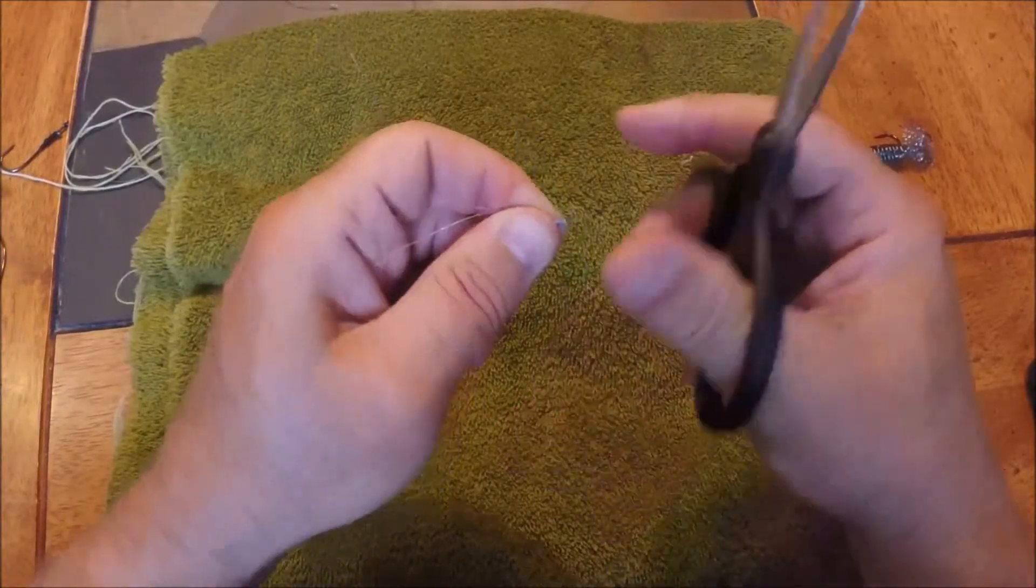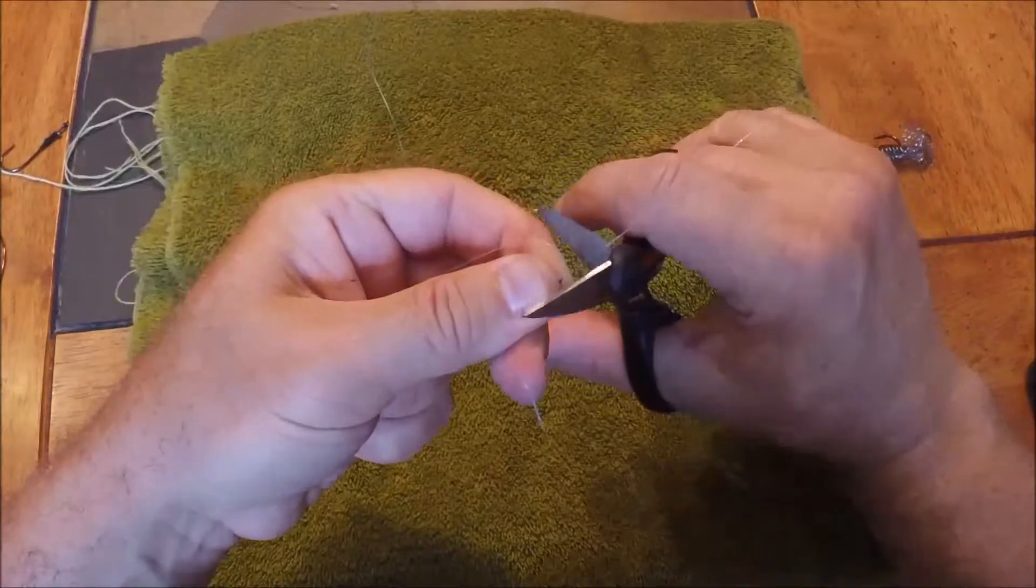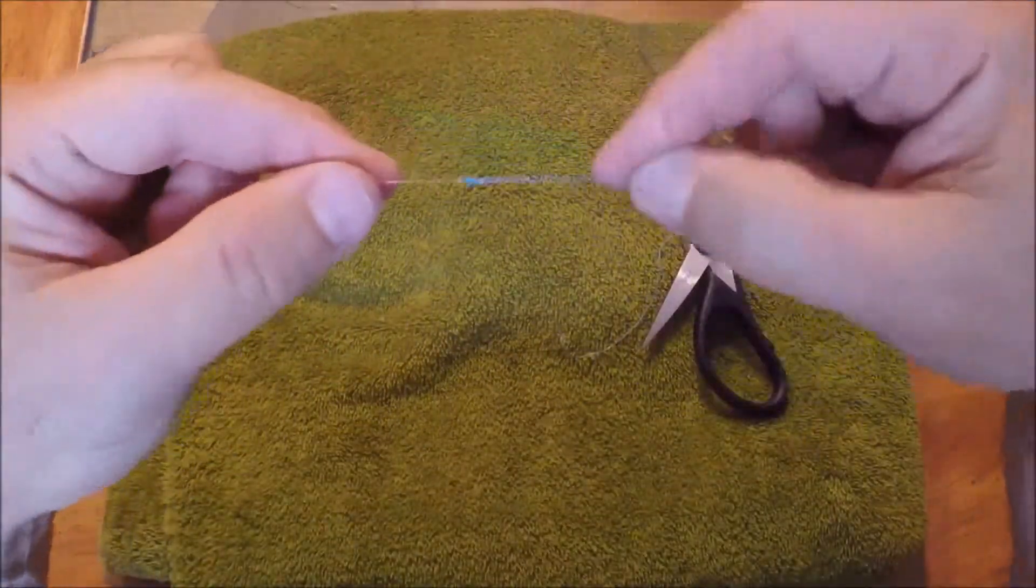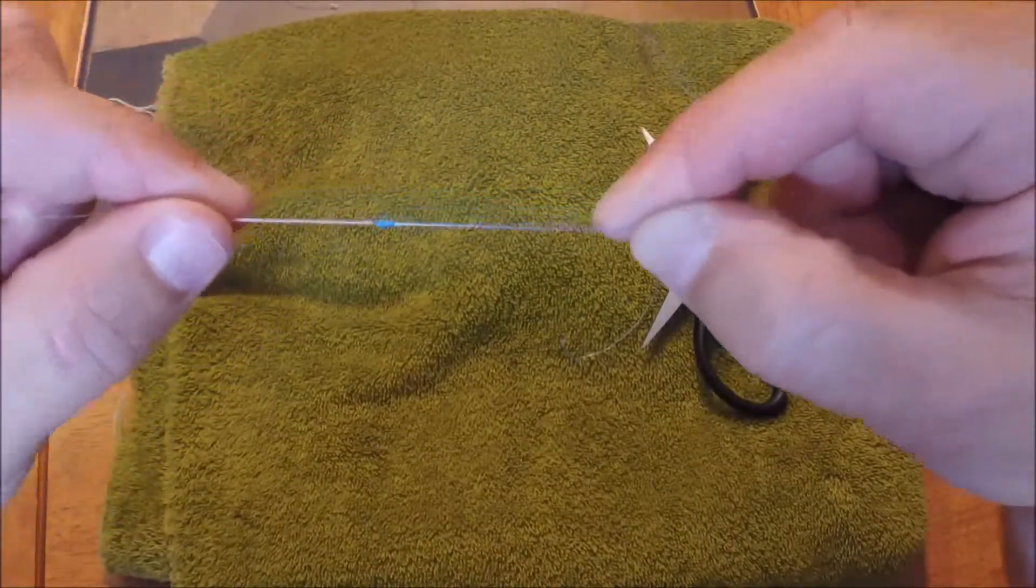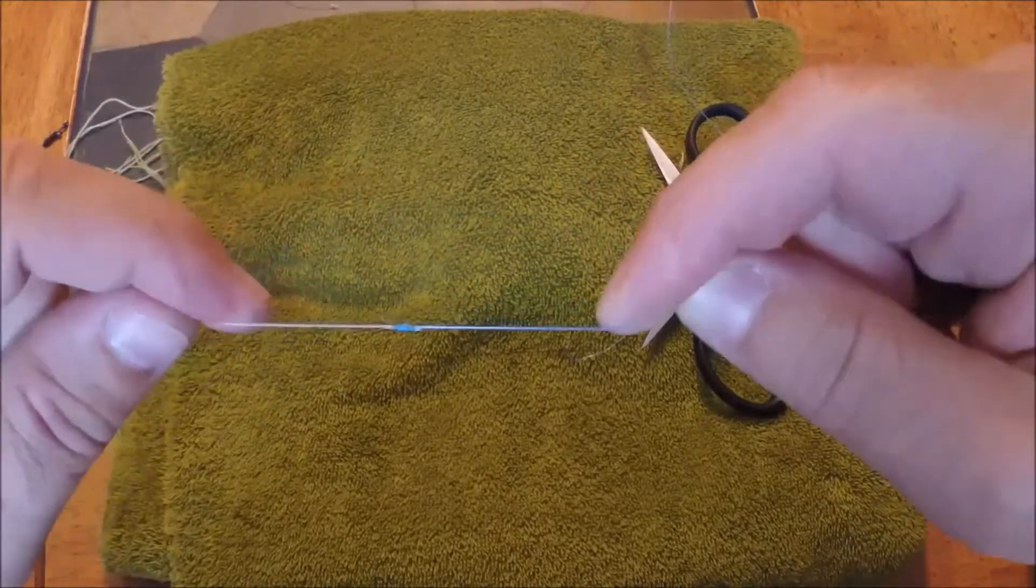These scissors aren't the best. There we go. There's one. Get my other tag end. And there you have the modified Albright. It's a very thin knot. Again, can make it through the guides very easily.